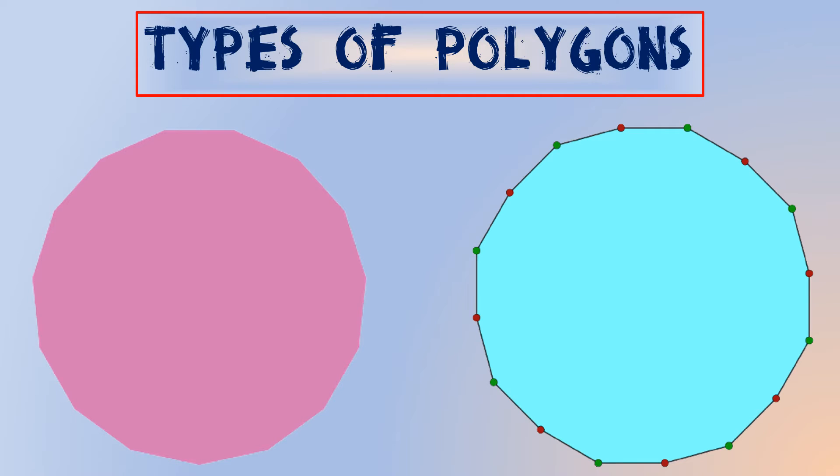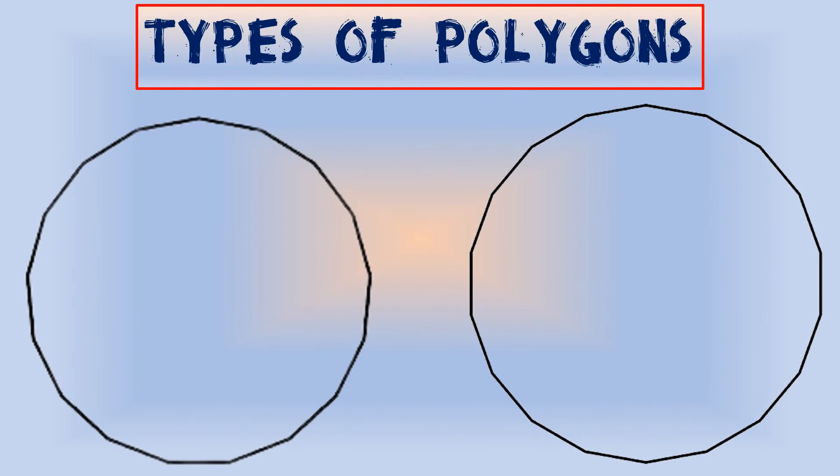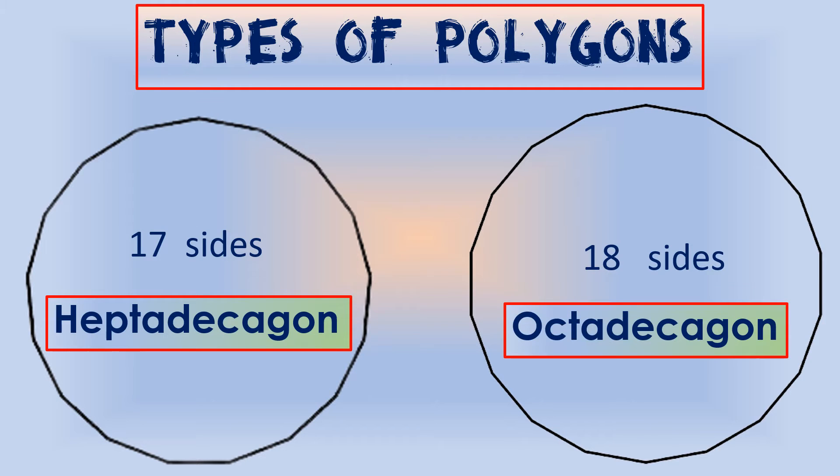A polygon with fifteen sides is called a pentadecagon, and sixteen sides, a hexadecagon. If a polygon has seventeen sides, it is called a heptadecagon, and an eighteen-sided polygon is known as an octadecagon.